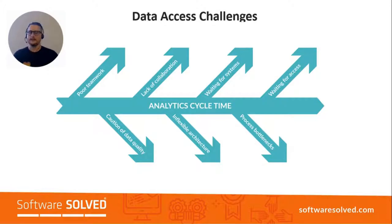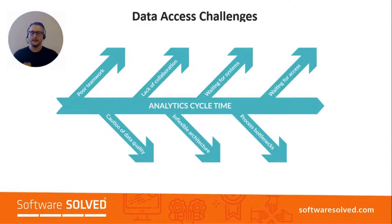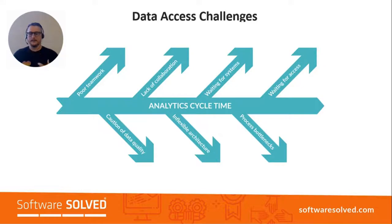Lack of collaboration — passing off between different departments can be a real problem if the requirements aren't understood. Waiting for systems or access to systems, which might be disparate in different places, so you might not be able to quickly gain access to the data sets you require. Caution around data quality — not having confidence in the data passing through the system. Inflexible architecture that prevents you building or scripting access when needed. And process bottlenecks where handoffs between teams become disjointed and slow down efficiency.